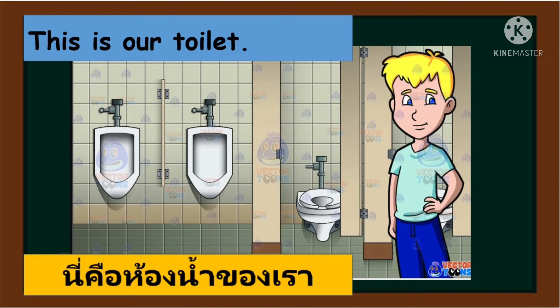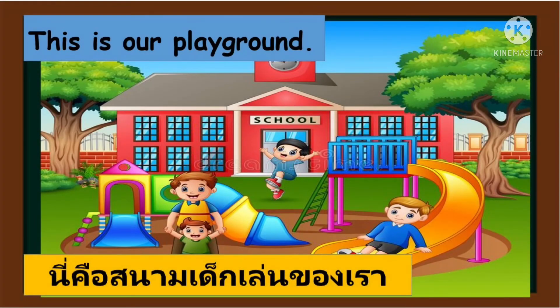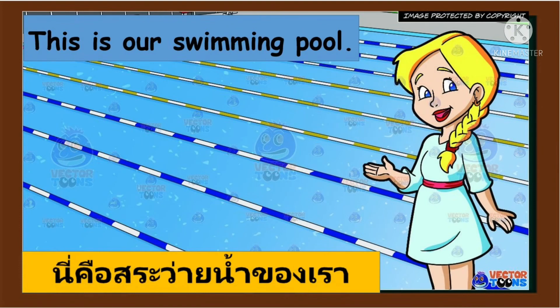Next, this is our toilet. Again — this is our toilet. Very good, class. Next, this is our playground. Again — this is our playground. Very good! The last one is this is our swimming pool. Again — this is our swimming pool. Excellent, class!